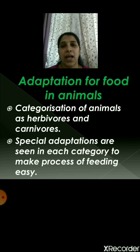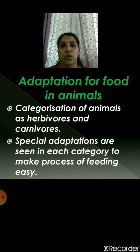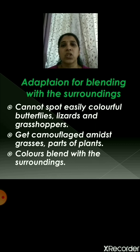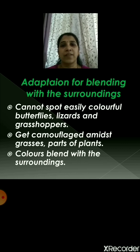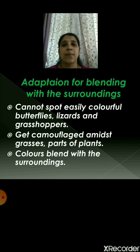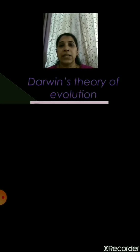For example, lion and tiger have sharp teeth, and the adaptation is used to tear flesh. Then let's move to adaptation for blending with the surroundings. Whenever you go to a park or garden, you cannot easily spot colorful butterflies, lizards, and grasshoppers. This is because they get camouflage — they disguise themselves among grasses and parts of plants like leaves, stems, and flowers — because their color blends with the surroundings.